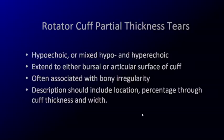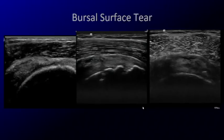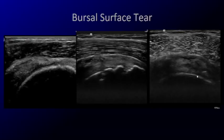Partial thickness tears can be classified based on their location — either on the bursal side or the articular side. When you describe them, note where they are and measure their size. Bursal surface tears abut the bursa, where the subacromial subdeltoid bursa lies, and you can see a defect in the tendon that doesn't go all the way through. If you're scanning with a lot of pressure you may obliterate that, but as you lift up the transducer, you may see fluid enter that site, cluing you in to a bursal surface tear.